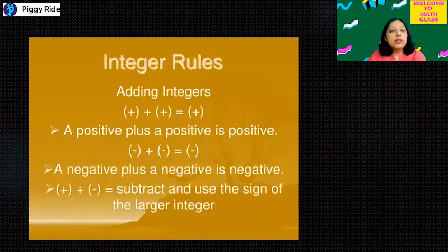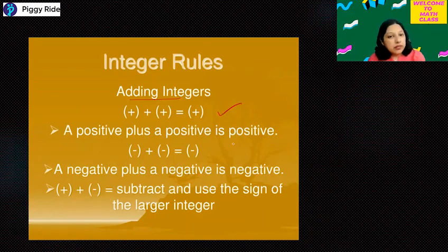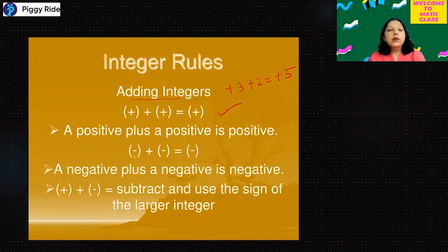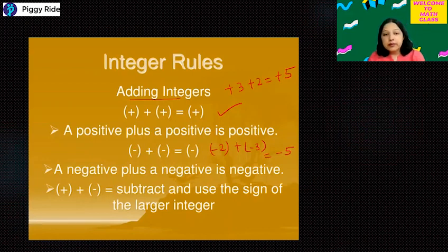After the properties, let's quickly see some integer rules — how can we add and subtract integers. The first rule: positive plus positive always gives a positive integer. For example, plus 3 and plus 2 gives plus 5. Second rule: negative plus negative is negative. For example, minus 2 plus minus 3 gives minus 5. So when you add two negative integers, the answer is always a negative integer.